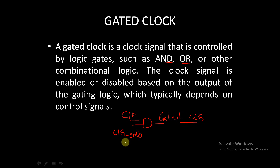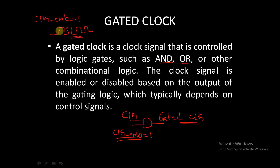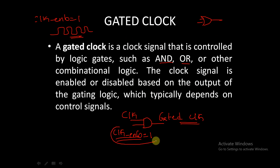The output will be our gated clock. If clock enable is equal to one, the clock will be generated; otherwise the clock will not be generated. If clock enable is zero, the output will be zero and no clock will be given to that particular system. You can also use an OR gate with clock and clock enable inputs to derive a gated clock. The clock signal is enabled or disabled based on the gating logic, which depends on control signals from elsewhere in the design.